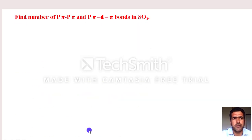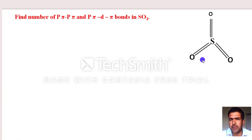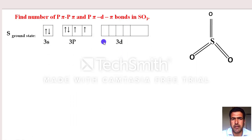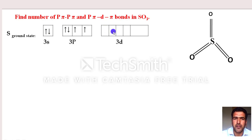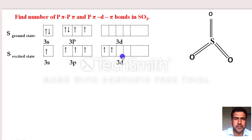Let's try another example: SO₃ (sulfur trioxide). Find total pπ-pπ and pπ-dπ bonds. Step 1: Sulfur's ground state outer electronic configuration is 3s², 3p⁴ — only 2 half-filled orbitals. Total bonds in SO₃ = 6 (counting 1,2,3,4,5,6). We need 6 half-filled orbitals. First excitation gives 4; we need to excite again into the d orbital. After necessary excitations, the excited state gives 6 half-filled orbitals.